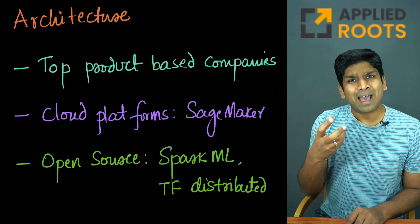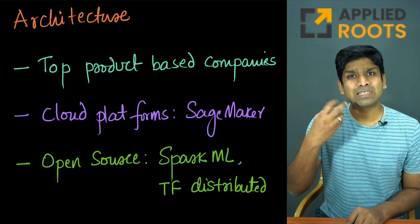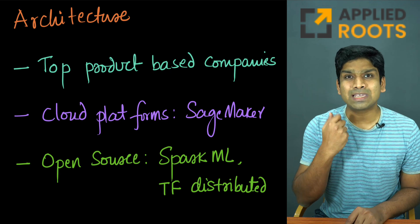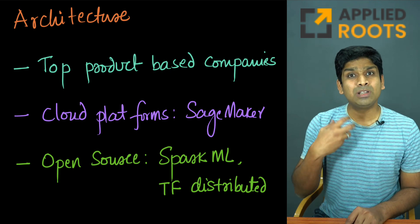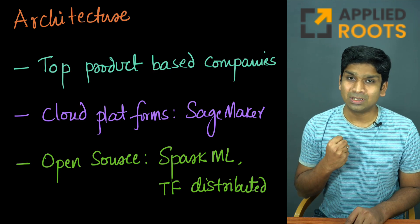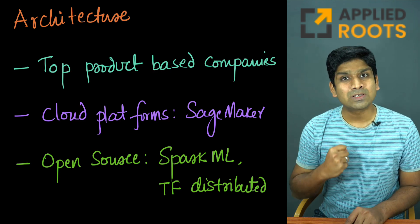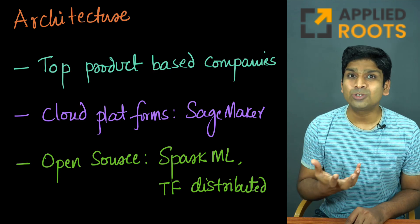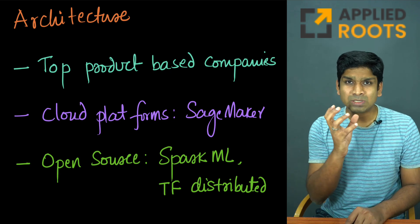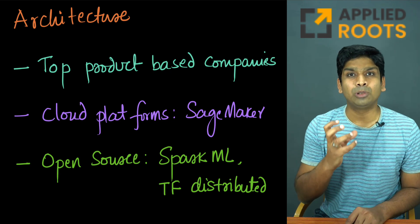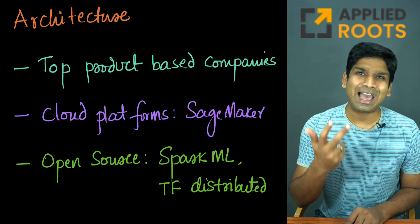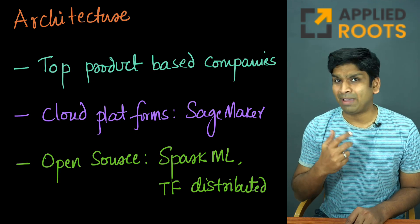We'll also take some examples from cloud platforms. For example, how does AWS SageMaker perform distributed training of large machine learning and deep learning systems? Similarly, how does the Google Cloud Platform have specialized tools to do that? How does Azure handle that? So we'll take examples from popular cloud platforms like AWS, GCP, and Microsoft Azure.